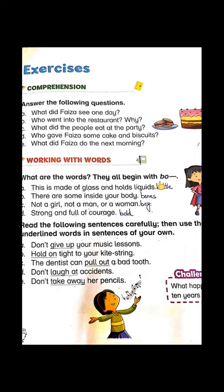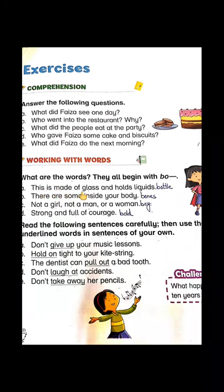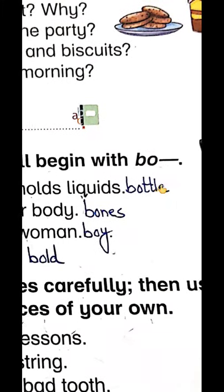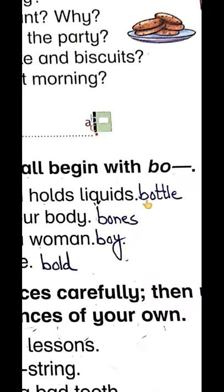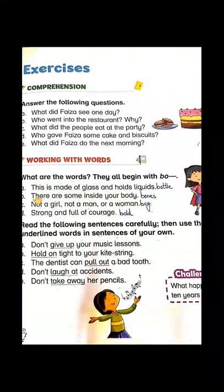You will enjoy doing it and it's knowledgeable as well. For example, the first sentence is: 'This is made of glass and holds liquid.' If the answer starts with BO, then it is — bottle! What is it? Bottle. The second clue: 'There are some inside your body' — and it starts with BO.